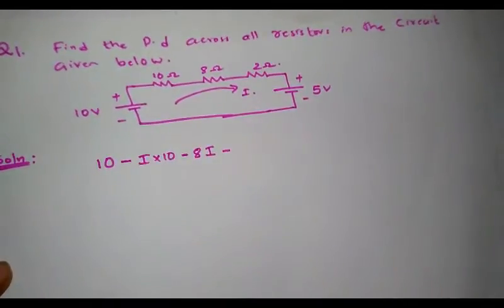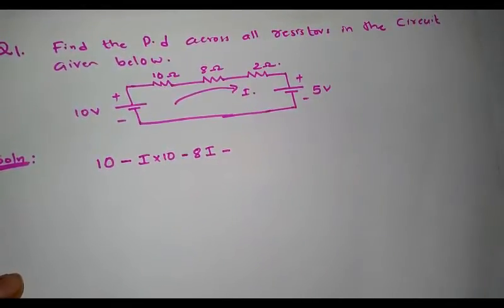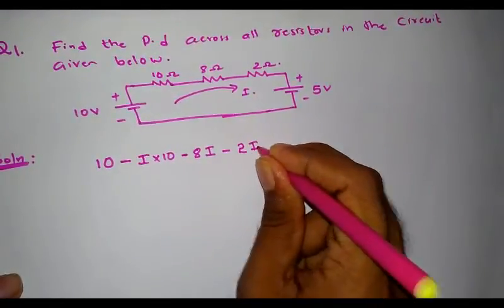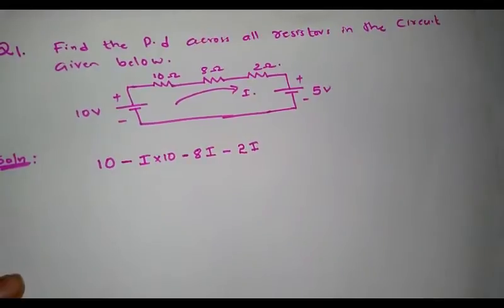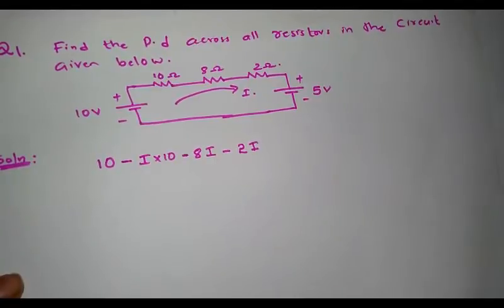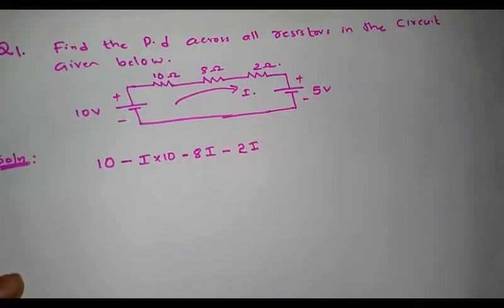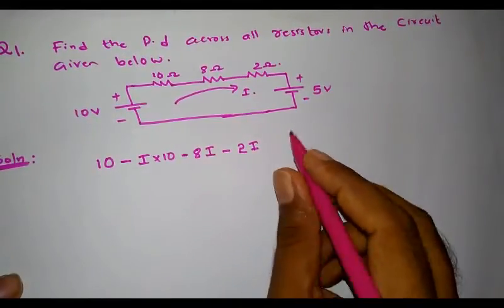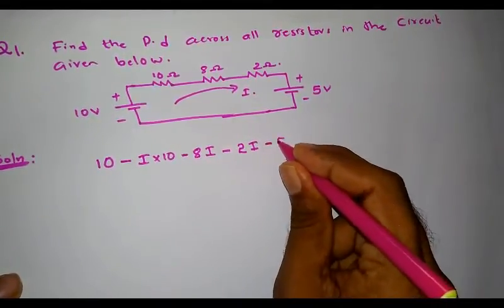Similarly, for the next element — the 2 ohm resistor — the direction of current and direction of traverse are the same, so we assign a negative sign for the voltage drop. Therefore I write −2I. The next element encountered is another voltage source. The sign assigned to a voltage source depends only on the direction of traverse, not the direction of current. Here I am traversing clockwise, so I move from the positive terminal to the negative terminal — there is a falling potential — and I assign a negative sign. That is −5 volts.